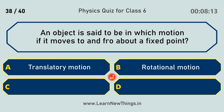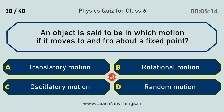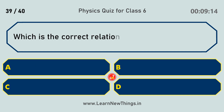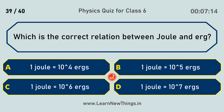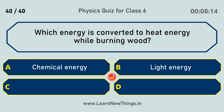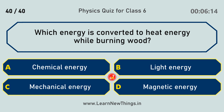An object is said to be in oscillatory motion if it moves to and fro about a fixed point. What is the correct relation between one joule and erg? One joule equals 10 to the power of 7 ergs. Which energy is converted to heat energy while burning wood? Chemical energy.